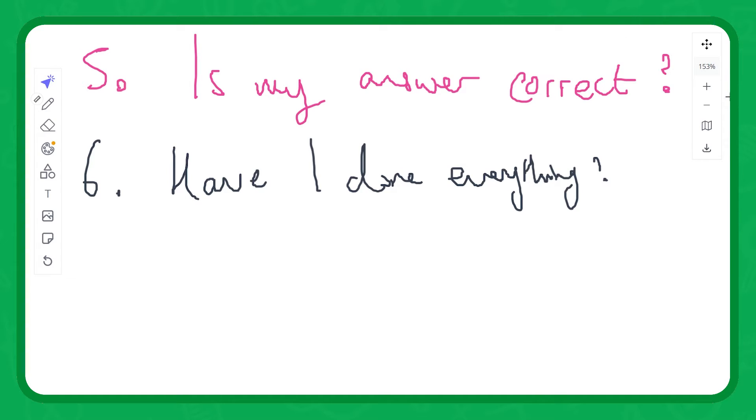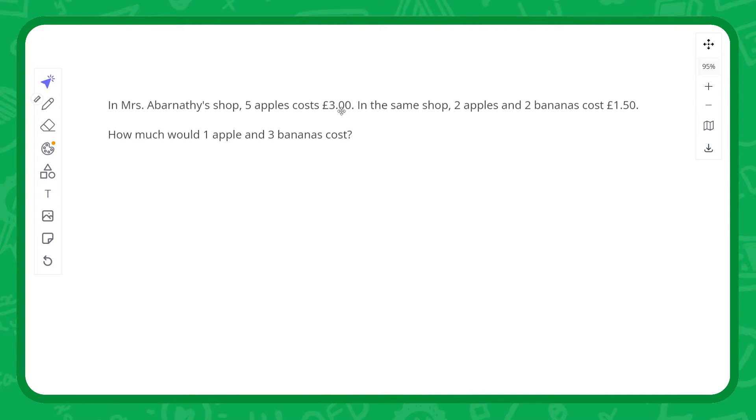Let's actually apply this stuff in the example. This is a fairly typical maths question. Let's use our process we just talked about, so I'm just going to read the question once then we'll go through and highlight it. In Mrs. Abernathy's shop, five apples cost three pounds. In the same shop, two apples and two bananas cost one pound fifty. How much would one apple and three bananas cost?